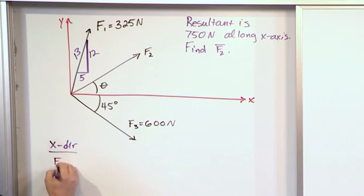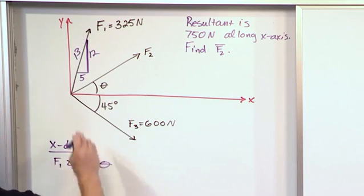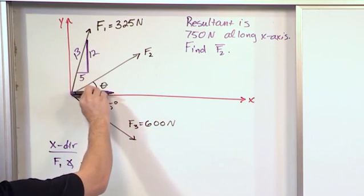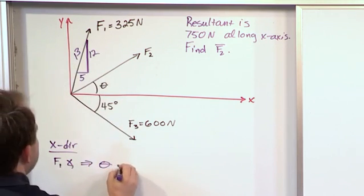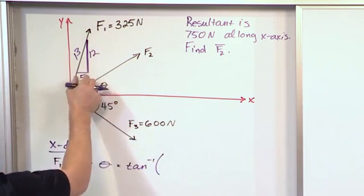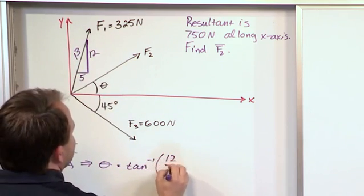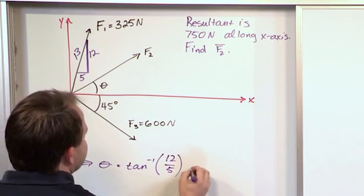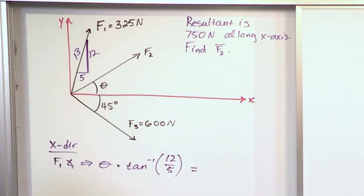So for F1, the angle theta, if you were to measure this to the x-axis like this, is going to be the inverse tangent of y over x. So 12 over 5, that's the definition of the tangent. And when you take 12 over 5, and you take...